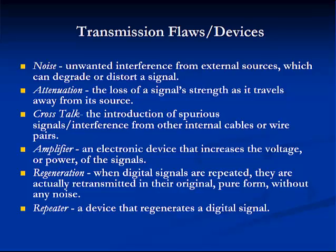Crosstalk is the introduction of spurious signals and interference from internal cables or wire pairs. An amplifier is an electronic device that increases the voltage or power of signals. Regeneration occurs when digital signals are retransmitted in their original pure form without any noise. Repeaters are devices that regenerate a digital signal.